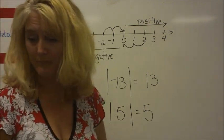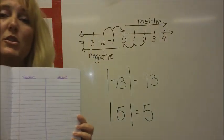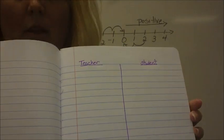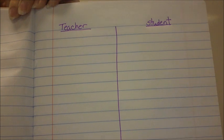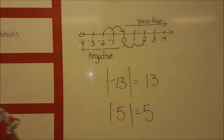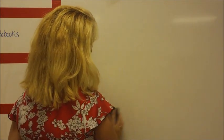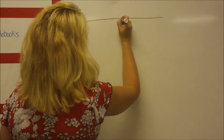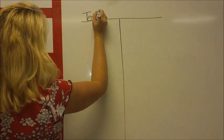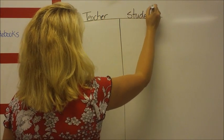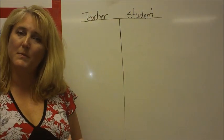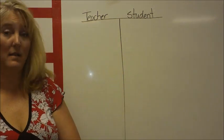Now turn your notebooks to page 5. On one side, give yourself two columns: a teacher column and a student column, just like this. I'm going to do the same here on my board. Go ahead and take notes on the teacher side — I'm going to give you some examples of absolute value problems, then some practice problems to complete and bring back to class tomorrow.